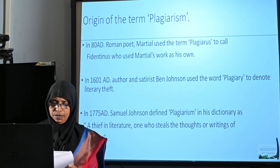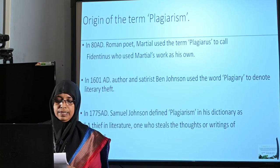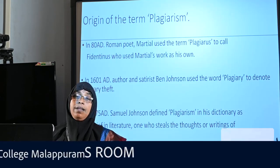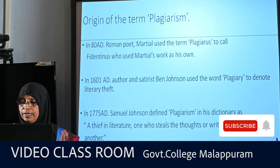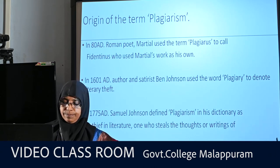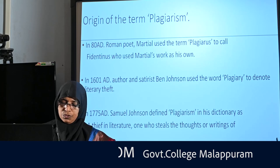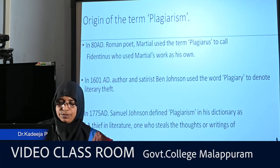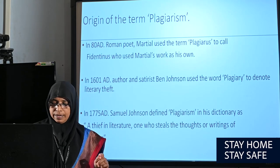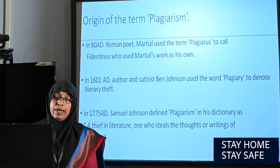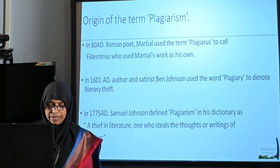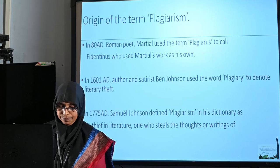In the modern context, plagiarism dates back to the period of enlightenment, between the 17th and 19th century, when greater concentration was given to individual creativity and authorship. This period witnessed the emergence of modern copyright law. In recent times of the internet and digital facilities, manipulation of digital data became easier and plagiarism became a major issue.